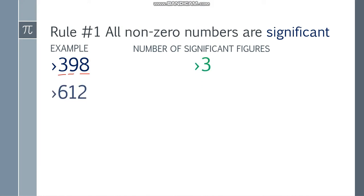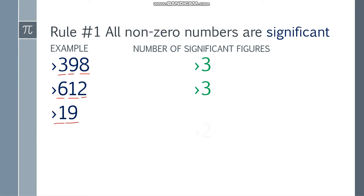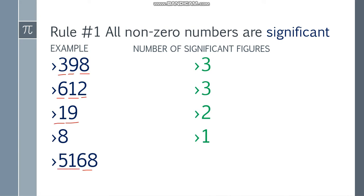Next example, paano pag 612? That will be 1, 2, 3 din. Next one, paano pag 19? So bilangin nyo lang — 1 and 2, two significant figures. Next one is 8 — one number lang siya, that will be 1 significant figure. And lastly, 5,168 — 4 numbers siya, so 4 significant figures.